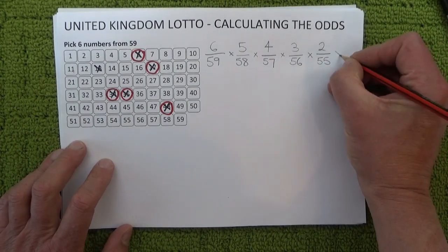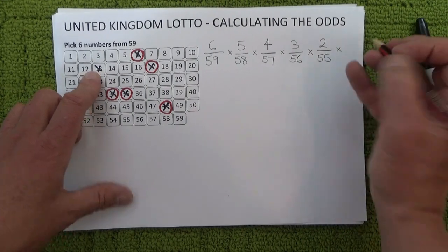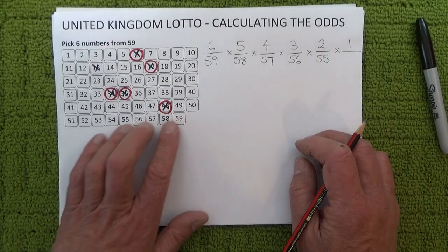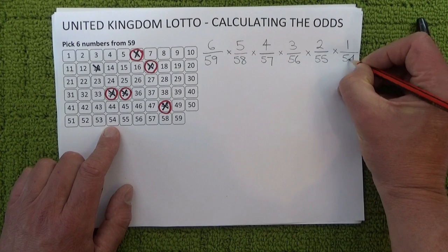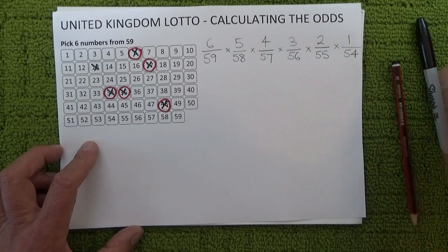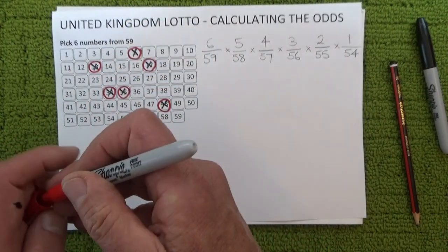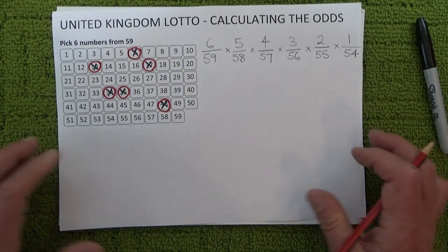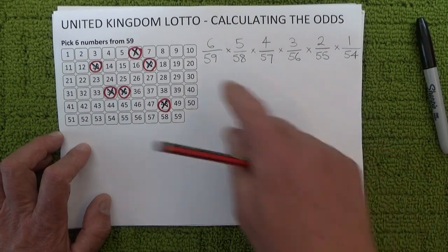When the final sixth ball is drawn, you've got one chance, because you have one unmarked number on your coupon and there are 54 balls left in the barrel as five have already been drawn. So you're left with one chance in 54 of matching the sixth number. I'll mark off the last number to show you've matched all six numbers on your coupon.